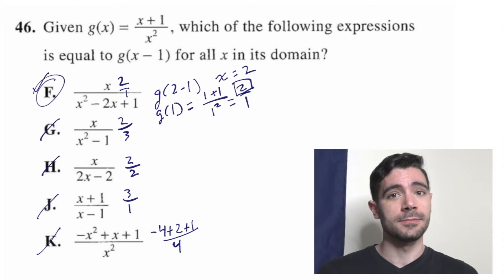So the answer was F. Lucky us. Helpful to keep in mind for function questions, that a function is a simple set of instructions. When this is what's in the parentheses, here's what you do to it. In this case, our original was (x+1) over x squared.